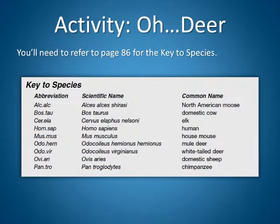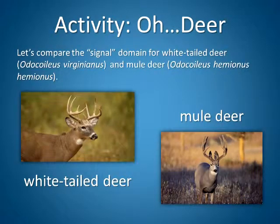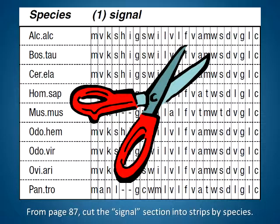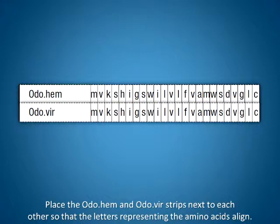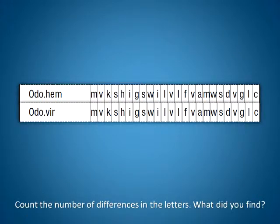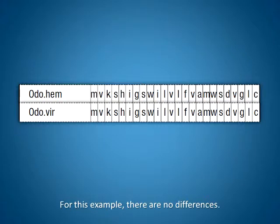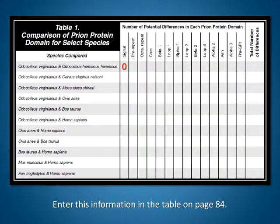You'll need to refer to page 86 for the key to species. Let's compare the signal domain for white-tailed deer and mule deer. From page 87, cut the signal section into strips by species. Place the ODO.HEM and ODO.VIR strips next to each other so that the letters representing the amino acids align. Count the number of differences in the letters. For this example, there are no differences. Enter this information in the table on page 84.